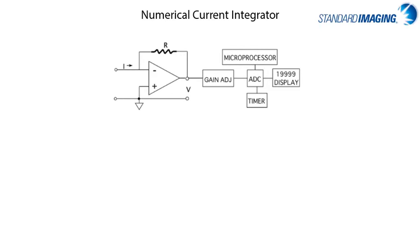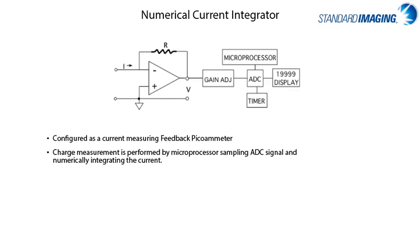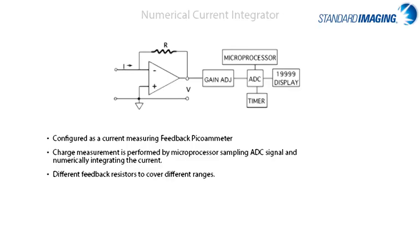Once the electrometer front end detects a signal, there are numerous ways to display that information. Standard Imaging electrometers make use of an integrator to measure charge by integrating the current over a selected time period. It is important to note that leakage currents represent non-dosimetric signals within an ionization chamber and associated electrometer. Their effects on the true radiation-induced dosimetry currents are minimized with a well-guarded chamber, low-noise triaxial cables, and sophisticated electrometers.